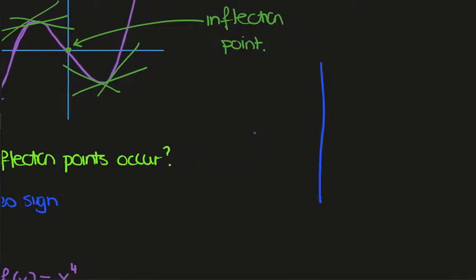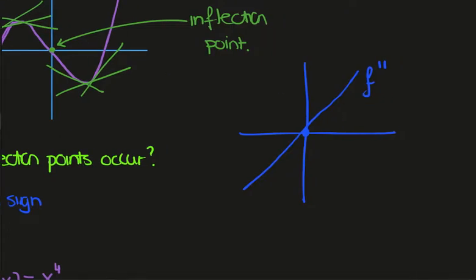Let's say we graphed the second derivative of the function and it looked like this. We would say the second derivative equals 0 at x equals 0, and a lot of people interpret this to be the condition that guarantees an inflection point. But notice that the second derivative here is negative to the left, while to the right of the origin it is positive — so there is a change of sign here.